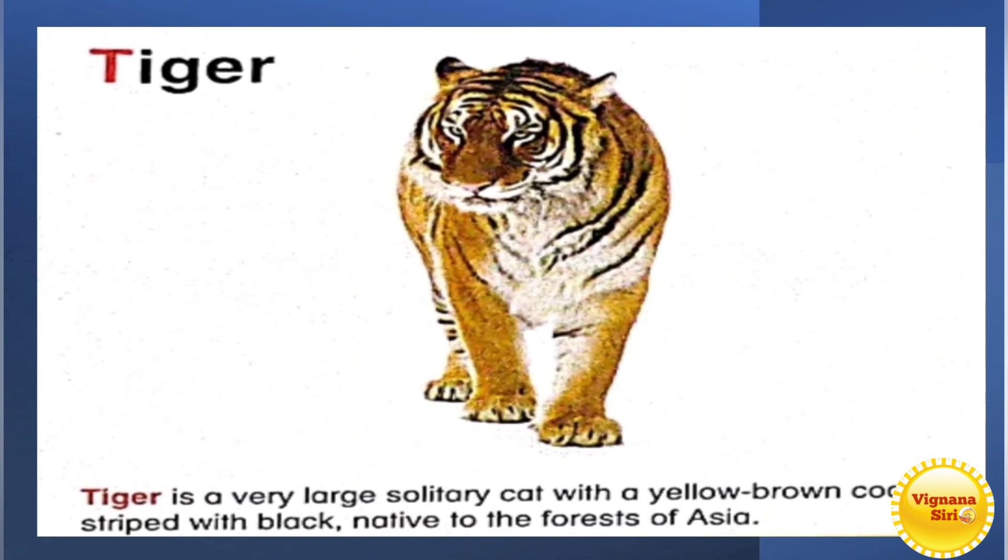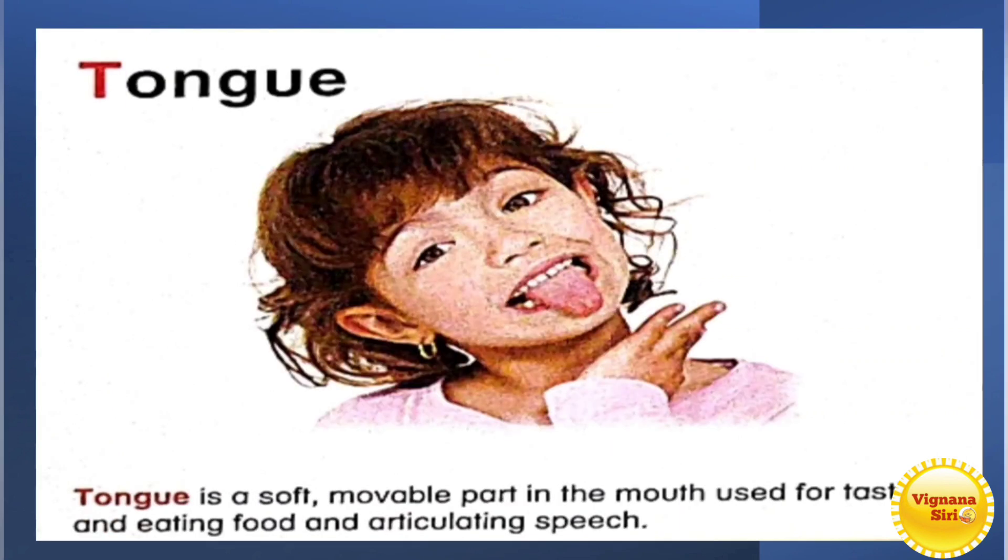Now T for tiger. You know the tiger, right? Yes. So tiger is a large solitary cat with a yellow brown coat striped with black native to the forests of Asia. There will be different types of tigers. You will see them in zoo.